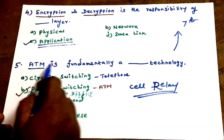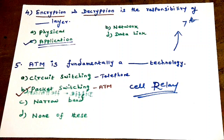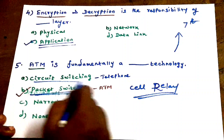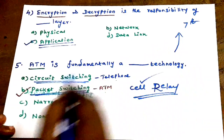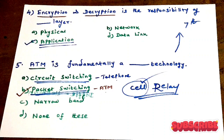Question 5: ATM is fundamentally a dash technology. ATM uses what technology? The answer involves packet switching, circuit switching, and telephone concepts. ATM uses a cell concept plus packet switching — that is ATM. This is a very important point.